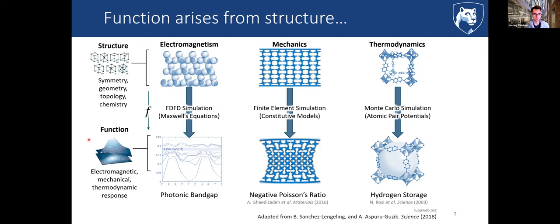Those functionalities might be electromagnetic, mechanical, or thermodynamic response. We come up with materials either by finding them or making them based on intuition or prior experience, and we can do simulations or experiments to evaluate the response. For electromagnetism, for instance, we can take a colloidal crystal and simulate the scattering of electromagnetic waves to get a photonic band gap — this is how structure in real space leads to an electromagnetic response.